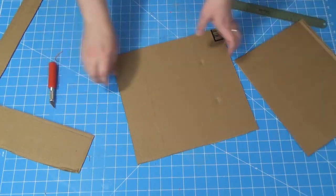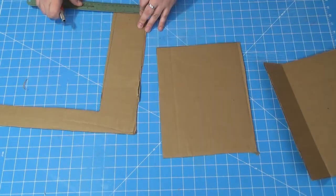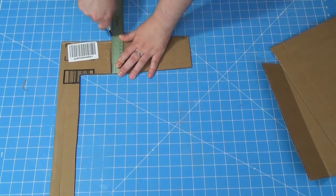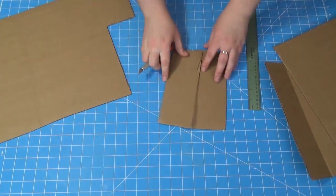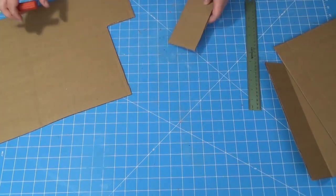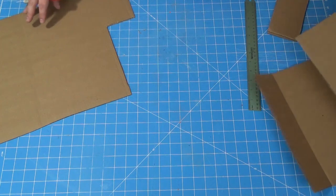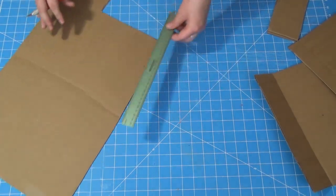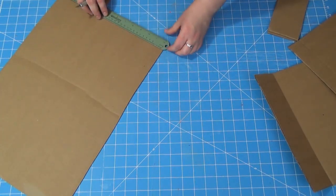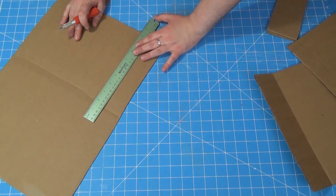For the sides, cut two pieces that will fit the top and bottom, about 8 inches by 2.75 inches. Cut another piece for the length of the book, about 10.5 inches by 2.75 inches.